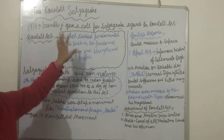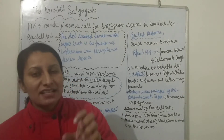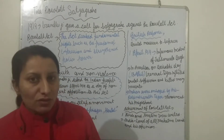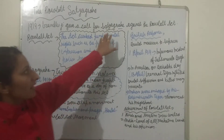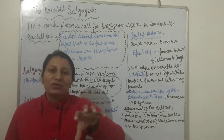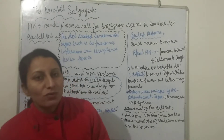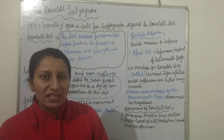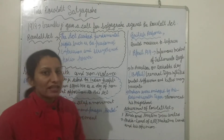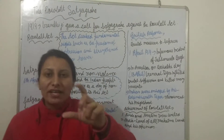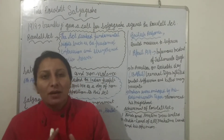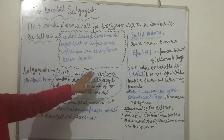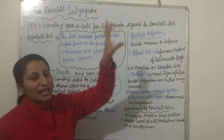Starting from 1919 — in 1919, Gandhi ji started a movement that we are calling the Rowlatt Act movement, or the Rowlatt Satyagraha. The word Satyagraha was used because that movement was founded on truth and non-violence. What does Satyagraha mean? It means truth and non-violence — both concepts together.